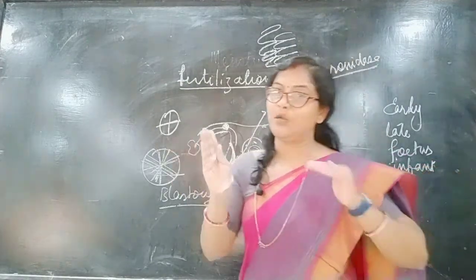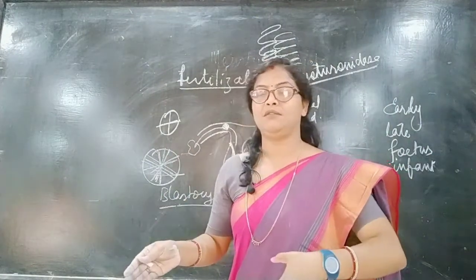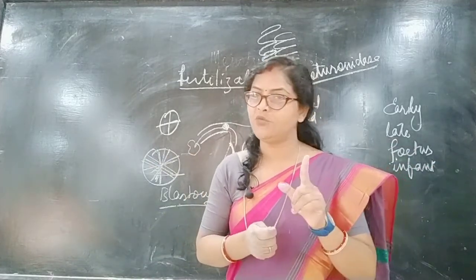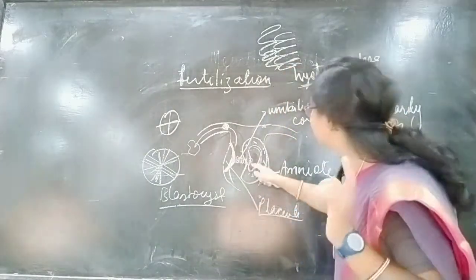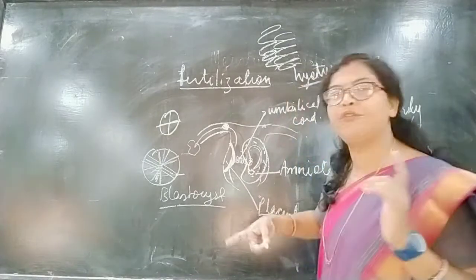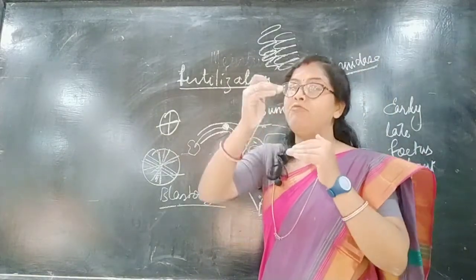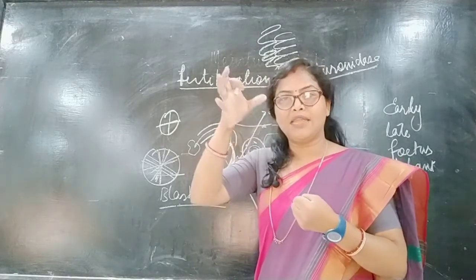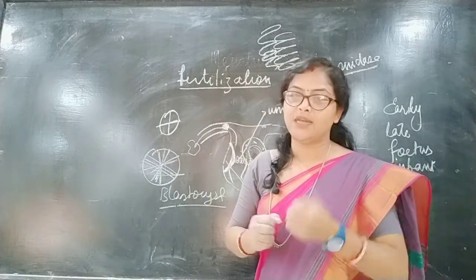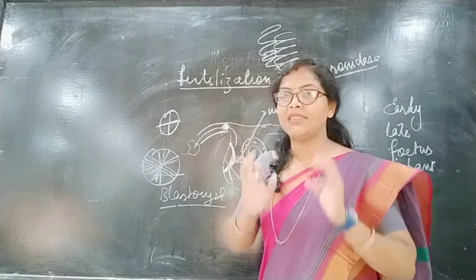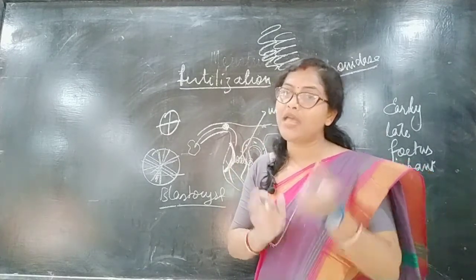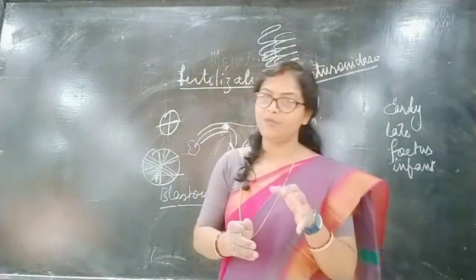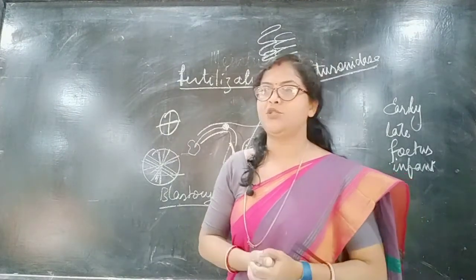The whole period from zygote to the complete fetus — the complete 9 months — is called the gestation period. After this period, the head of the baby starts moving towards the cervix, which is above the vagina. The cervix starts expanding and the baby moves down through the vagina. This process of birth is called parturition.